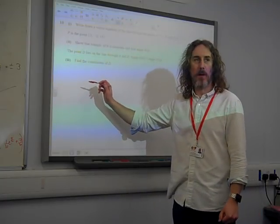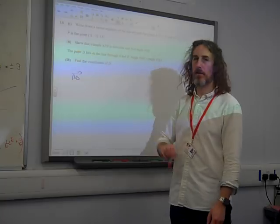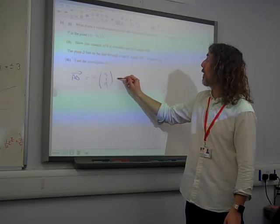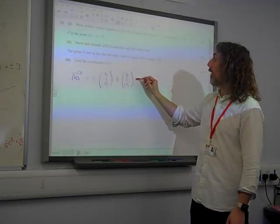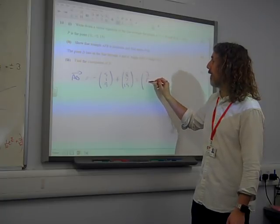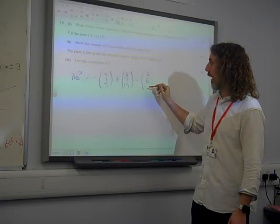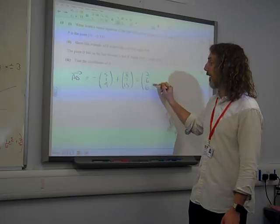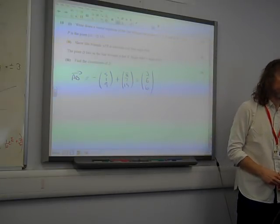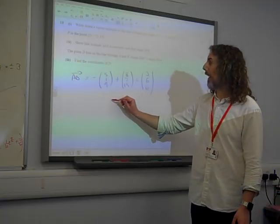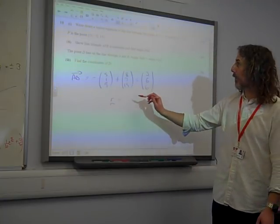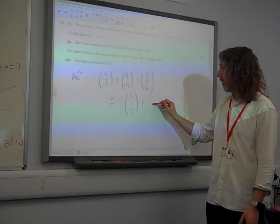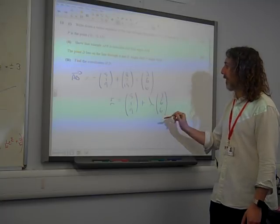We need to know the vector AB, the direction vector of what's going on here. So I did that as being minus OA plus OB. That gives me 3,6,6. So that's the direction. I think the most common answer that people had was R equals the point A plus lambda times 3,6,6.